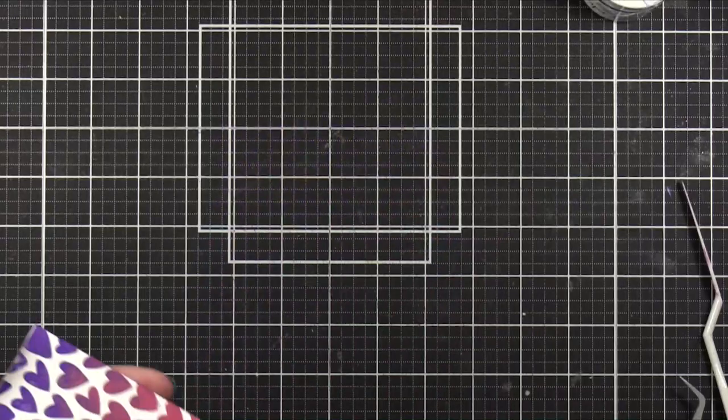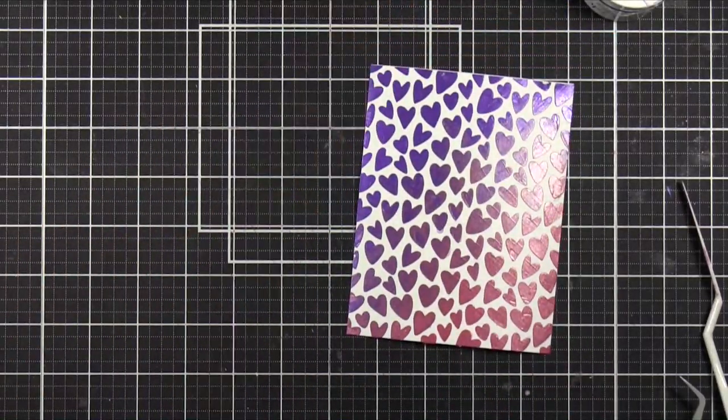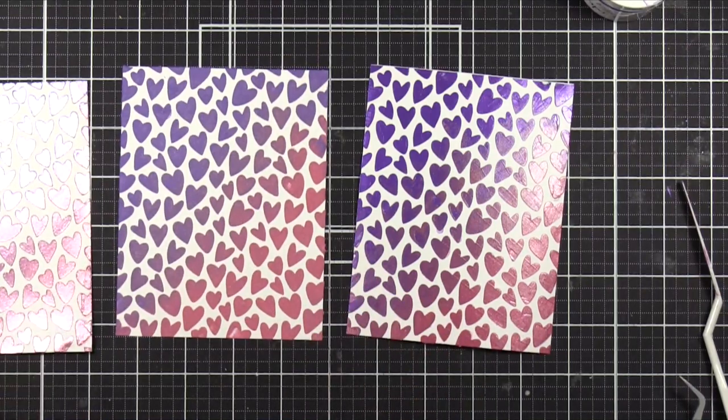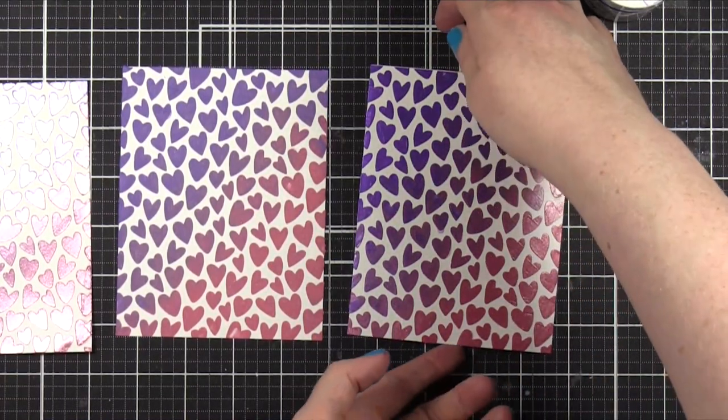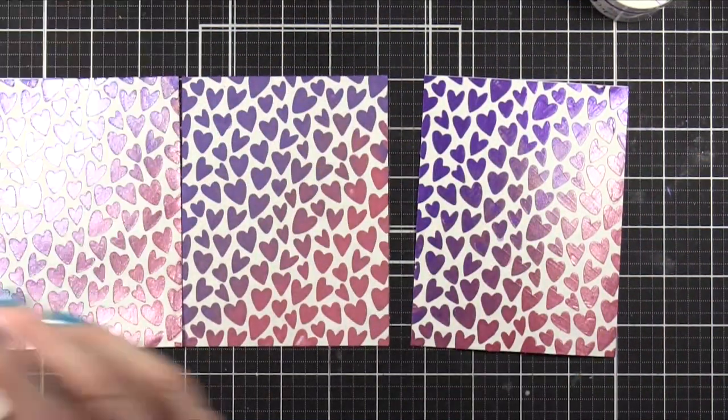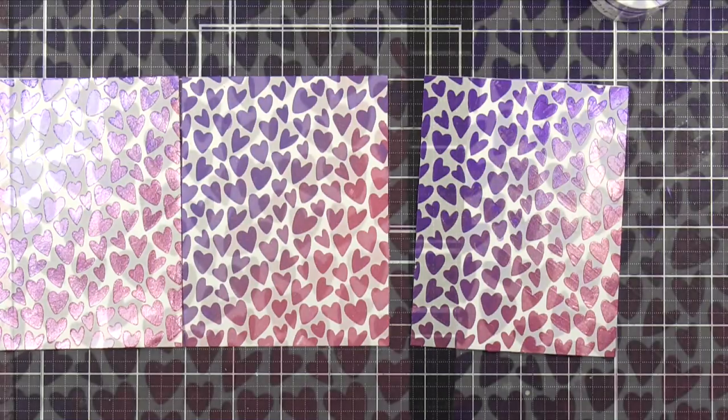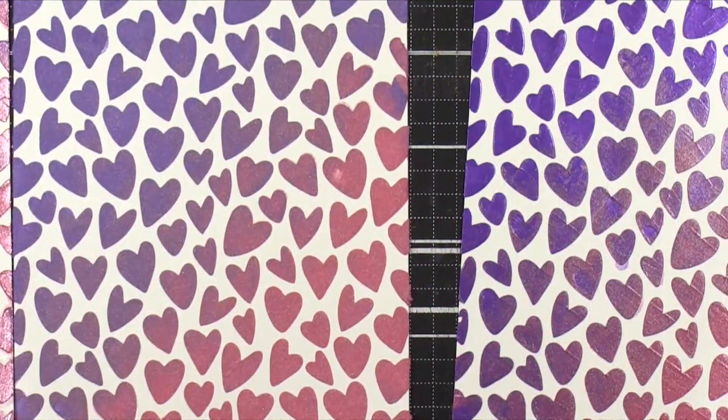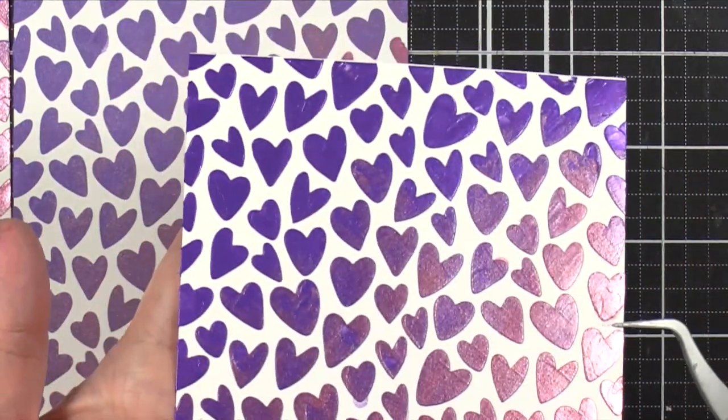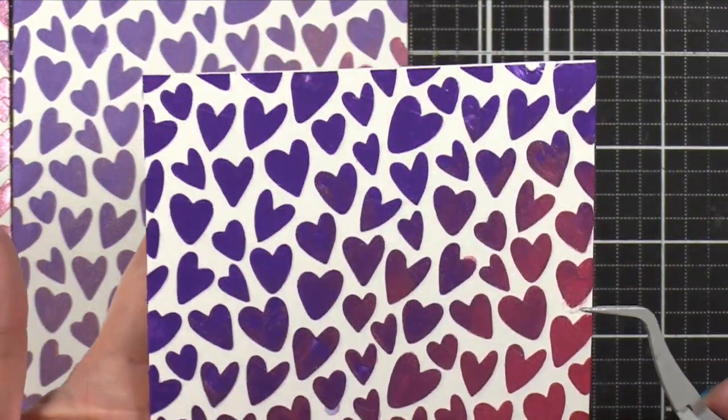So here are the three different finishes. This first one has the paper glitz mixed in. The middle one is the paper glaze enhancer, and then the one over on the far left is... Actually, no, that's the paper glitz, that first one. Okay, over here we've got the original. This is the original right here.